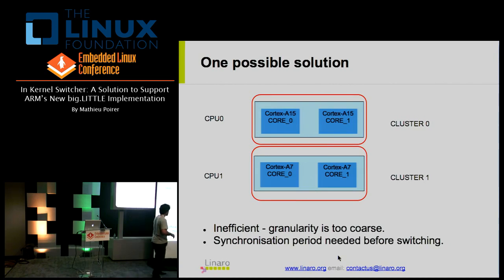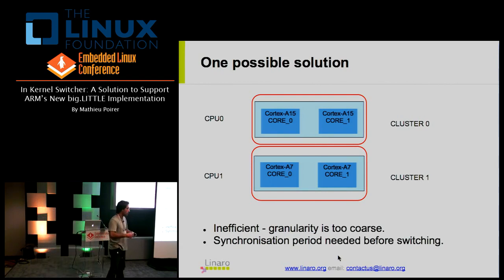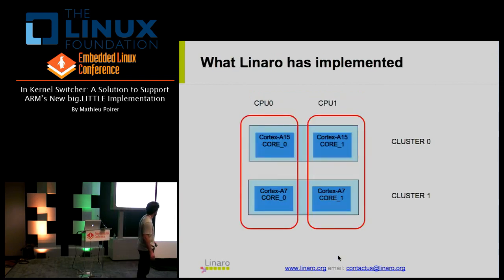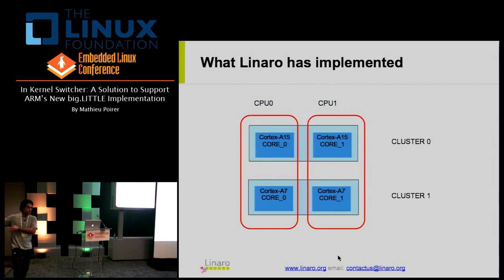If the first core — say A7-0 — is ready to move to the bigger cluster, there has to be synchronization with the second core in the cluster before it can move as well. During that synchronization, you can't process information, which increases your blackout period. A better solution is vertical integration: by integrating vertically, you create virtual CPUs that are independent from one another. At any given time, processing can happen on different cores independently — if virtual CPU 0 is running on the small core, nothing prevents the big core from being used on virtual CPU 1.